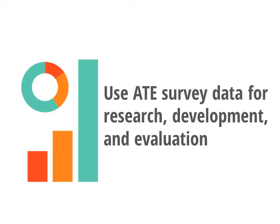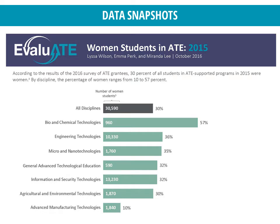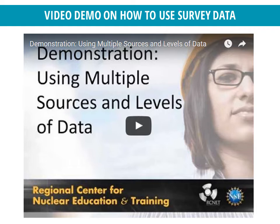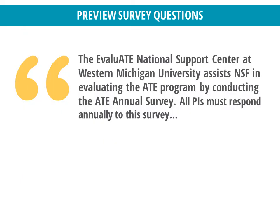Last but not least, every year we conduct a survey of ATE project leaders and prepare various reports to describe the activities and achievements of the ATE program. This information can be used for developing proposals as well as for project evaluation. In addition to detailed reports, we have one-page data snapshots, such as this one about women in the ATE program, which shows the percentage of students who are female by disciplinary area within the program. We also have a short video demonstrating how to use our survey data for project evaluation purposes. Completing the annual ATE survey is an expectation of all ATE grantees. A PDF version of the survey is on the Evaluate website, so you can review it to get a sense of the types of data all projects are expected to collect and report.